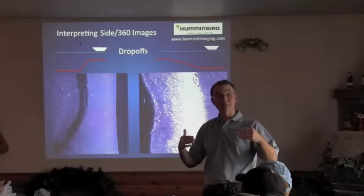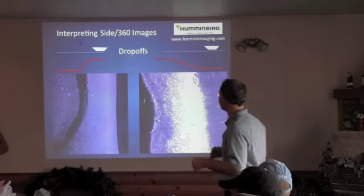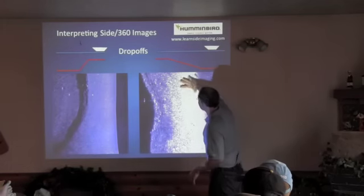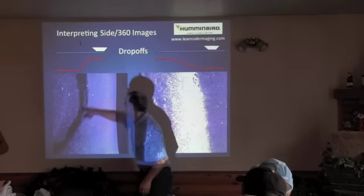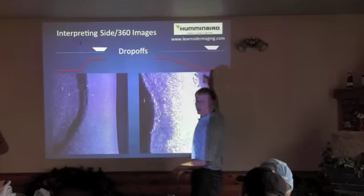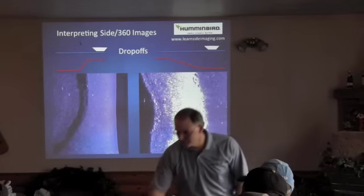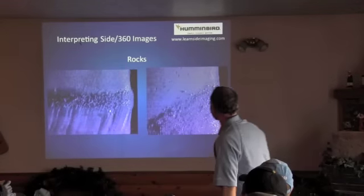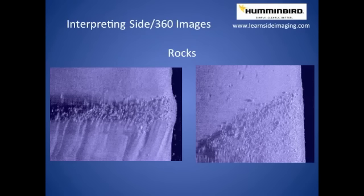So depending upon whether we're on top of the flat or in the deep water next to it, we can still image that drop-off area. It just appears differently depending on whether our boat is shallow or deep. Now let's look at some rocks. Rocks are one of the first things that people get good at identifying in side imaging because they look like rocks — there's virtually no interpretation associated with figuring out what a rock is.